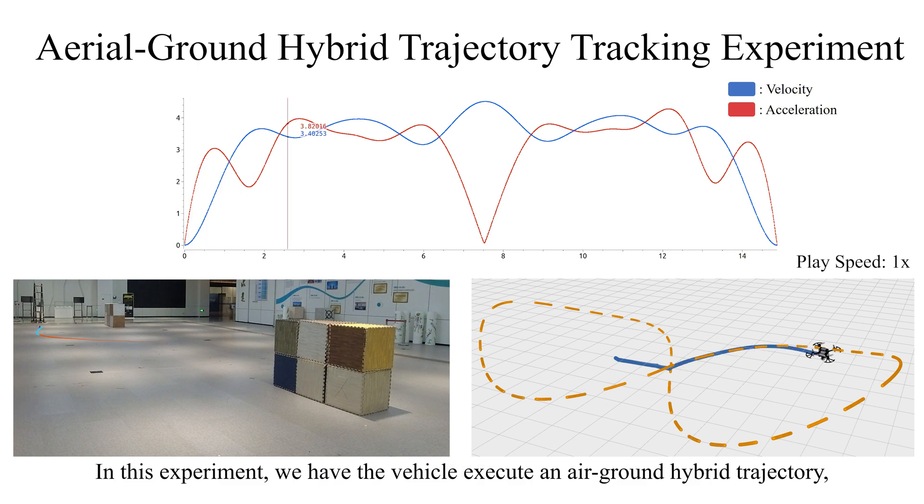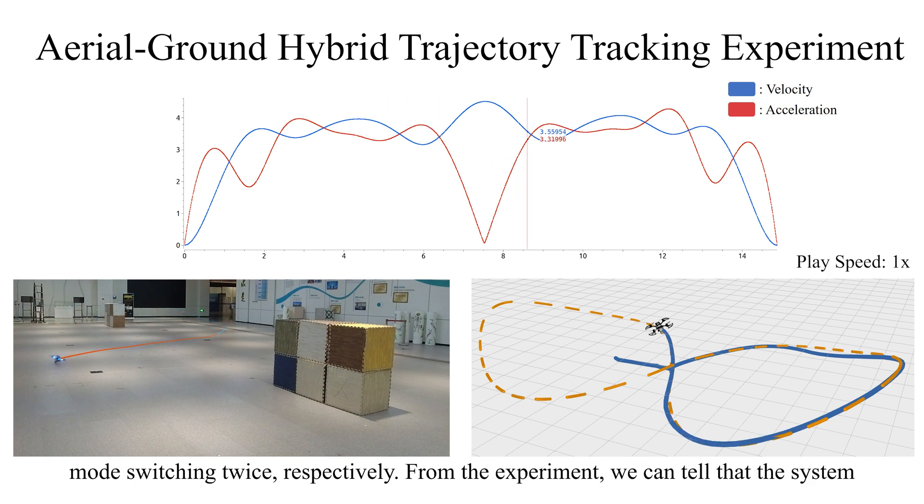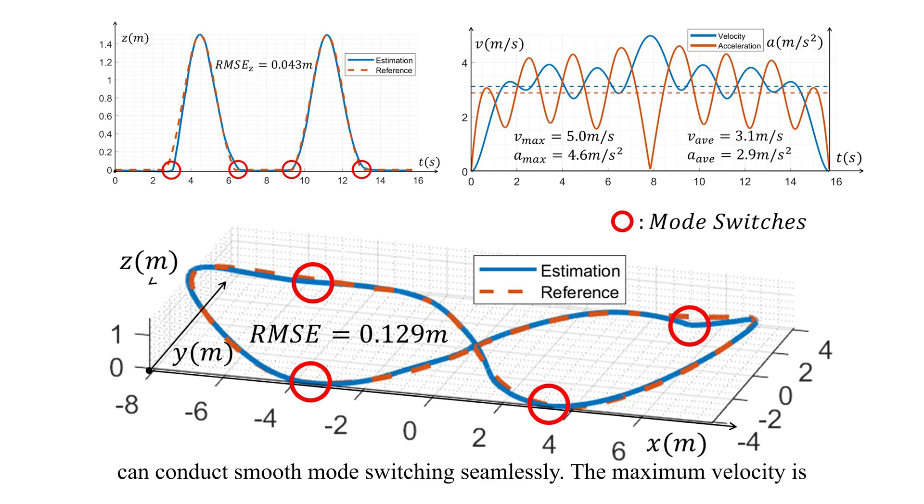In this experiment, we have the vehicle execute an air-ground hybrid trajectory where the vehicle performs an air-to-ground and a ground-to-air locomotion mode switching twice respectively. From the experiment we can tell that the system can conduct smooth mode switching seamlessly. The maximum velocity is 5 meters per second and the maximum acceleration is 4.6 meters per second squared.